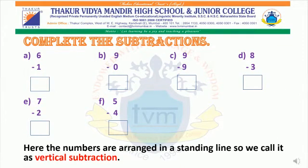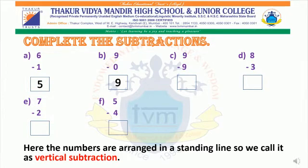Let us solve a few more sums of subtraction. Students, you can use your fingers to subtract. Complete the subtraction. 6 minus 1 is equal to 5. 9 minus 0 is equal to 9. 9 minus 9 is equal to 0. 8 minus 3 is equal to 5. 7 minus 2 is equal to 5. 5 minus 4 is equal to 1.